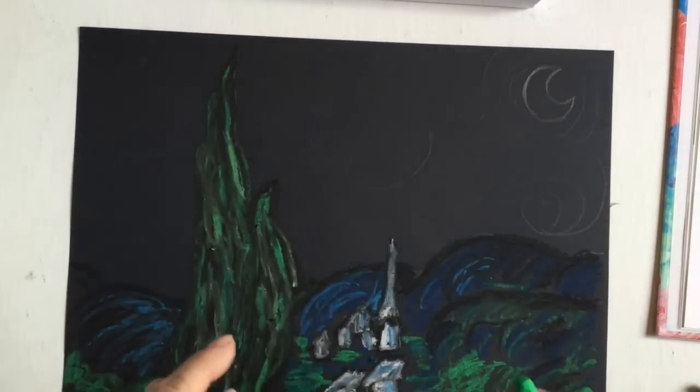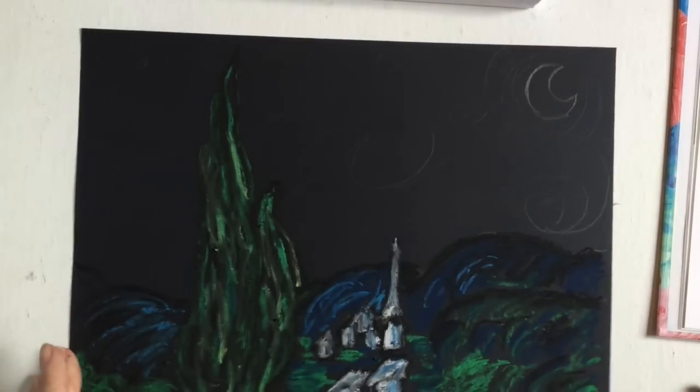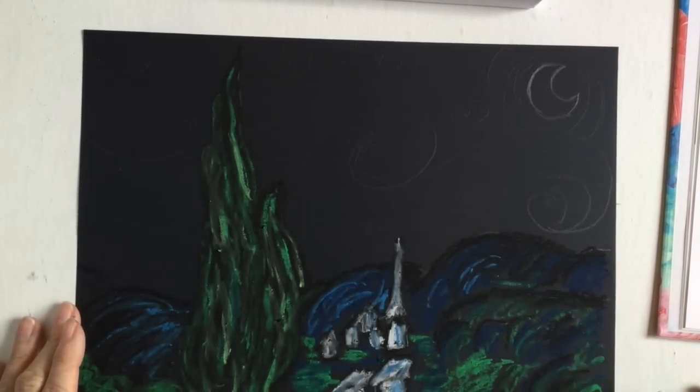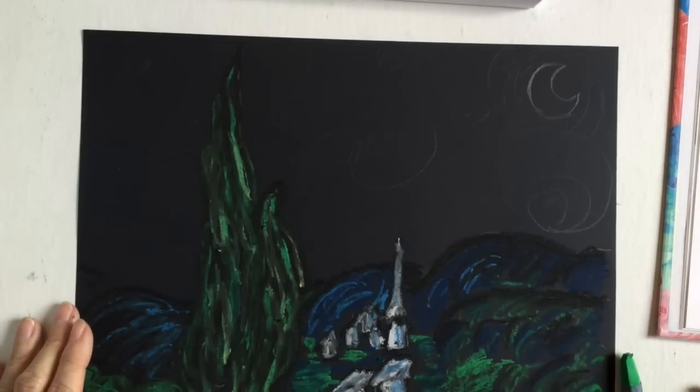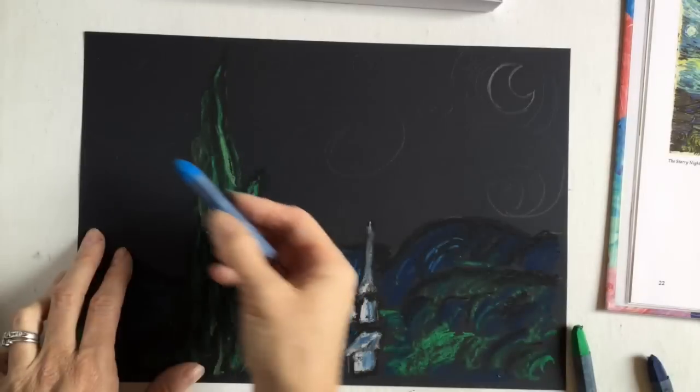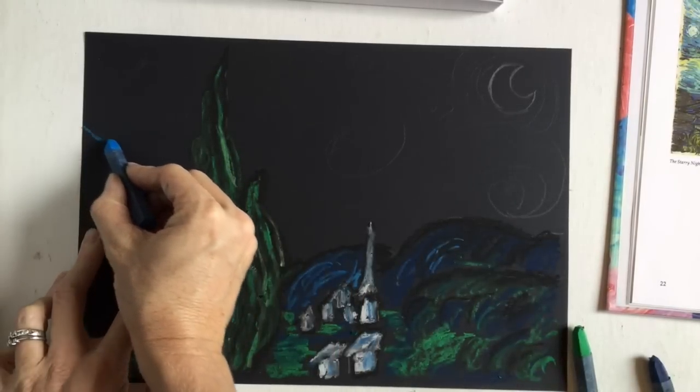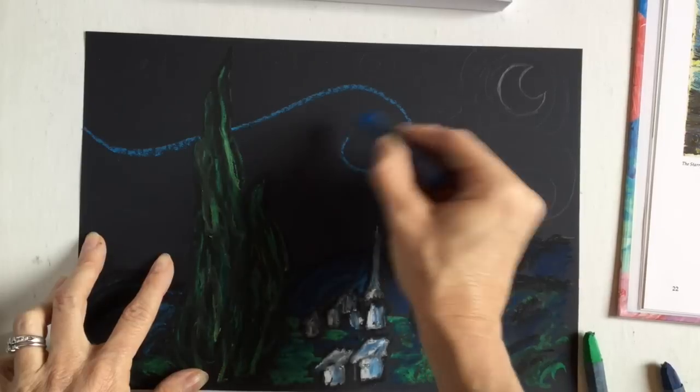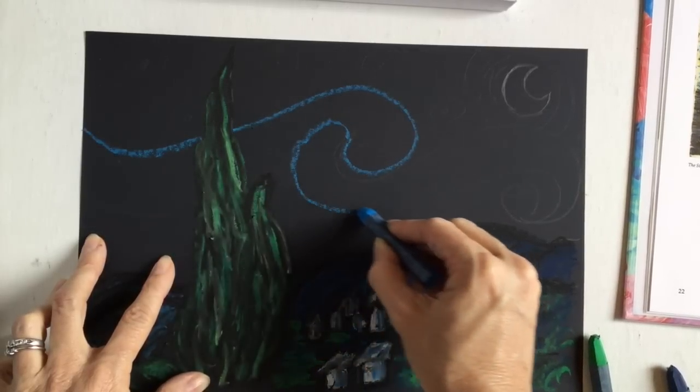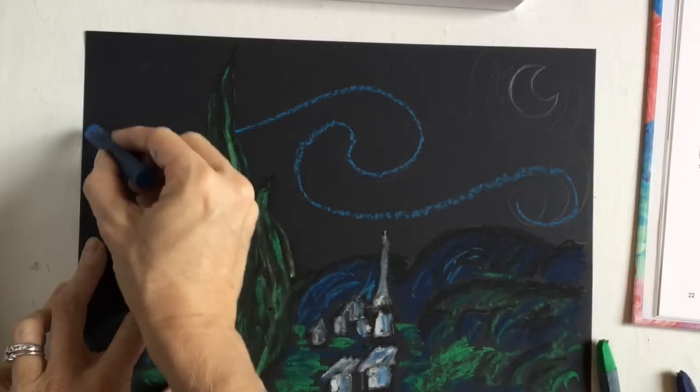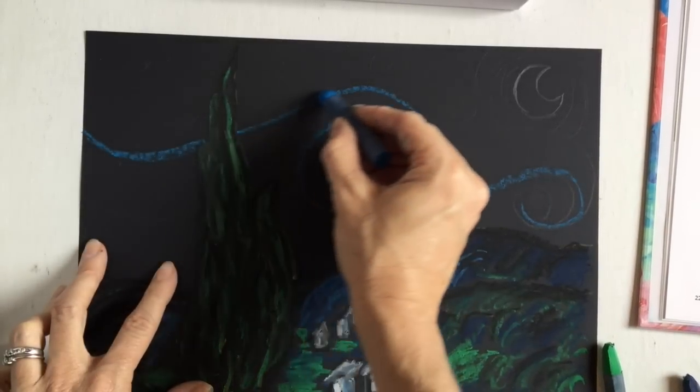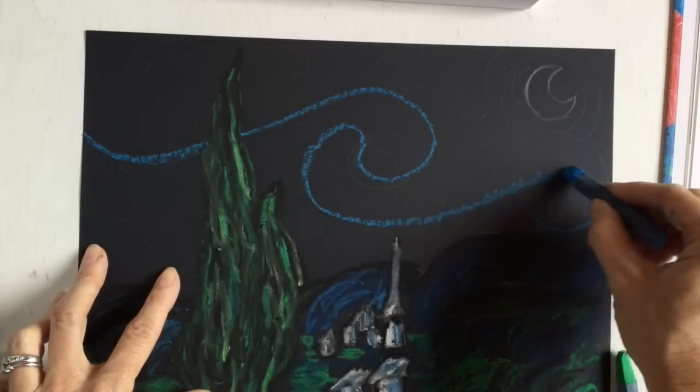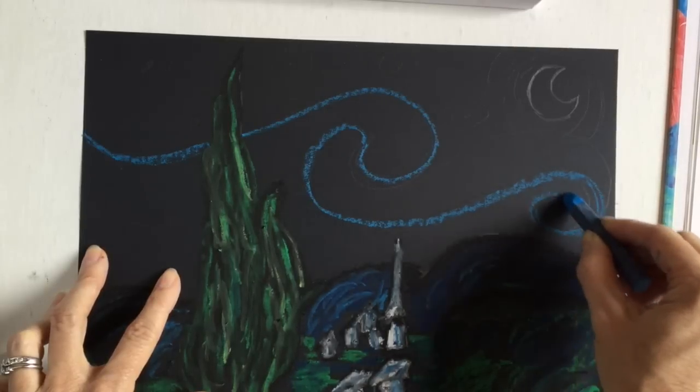So now we're going to go to the sky. Now the sky is the main part where all the movement is, where all the action is happening. So I'm going to start with blue and I'm just going to outline this part right here. And to get this I just made this line and curled around, and then curled around again and around like that.